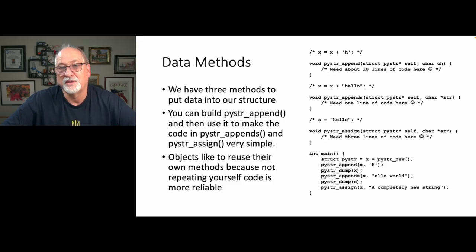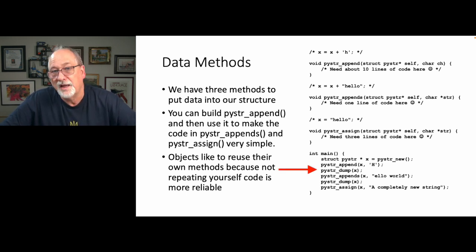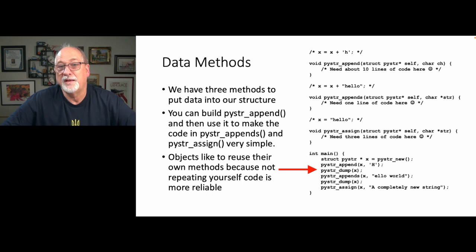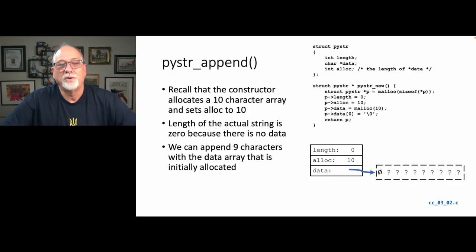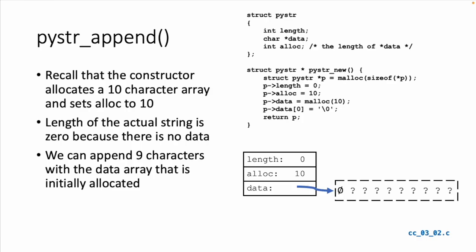Let's look at how these are used in main. We say struct PyStr star X equals PyStr new, which gives a new string object. Then we append a single character H, append a multi-character string, and dump it each time. Then we overwrite our object with a completely new string. Now let's walk through what you might need to do in PyStr append. Recall that when we set this thing up, we created length, allocated a 10-character array, had data point to it, and remembered we had 10 characters.